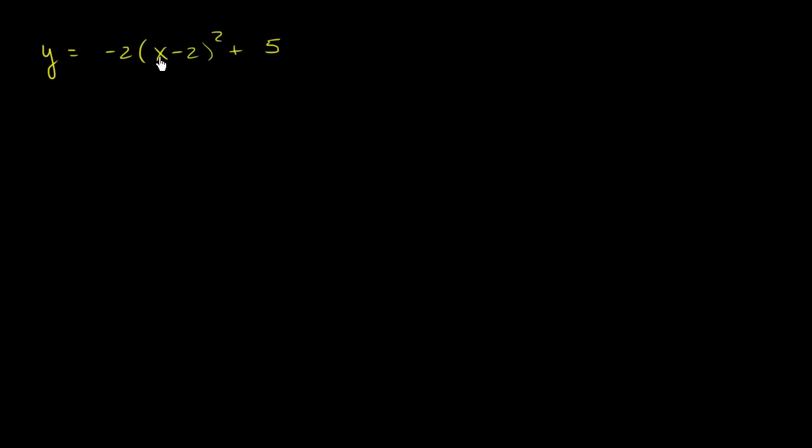So one thing, when you see a quadratic or a parabola expressed in this way, the thing that might jump out at you is that this term right over here is always going to be positive because it's some quantity squared. Or I should say it's always going to be non-negative. It could be equal to 0.